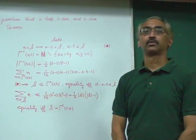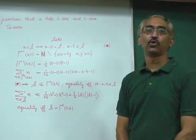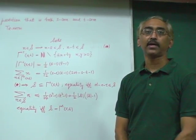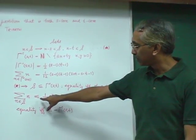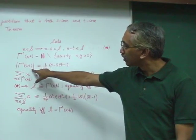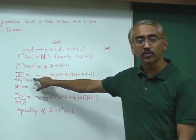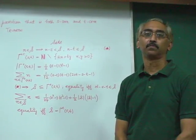To prove this inequality, we first show the case of equality that when S is gamma complement, we have this equality by using the expressions for the size of gamma complement and the sum of numbers in it.